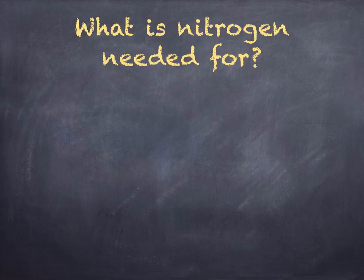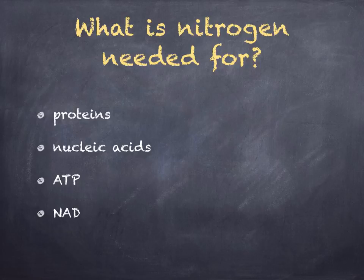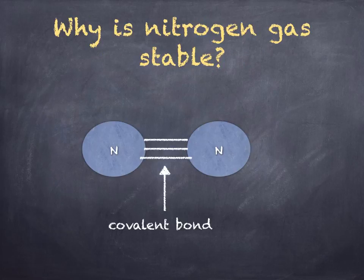Nitrogen is important — it's needed to manufacture proteins, nucleic acids, ATP, and NAD. Although 78% of the atmosphere is nitrogen, there are only a few organisms that can use this nitrogen gas directly. This is because the nitrogen molecule has got two atoms linked by a triple covalent bond, which makes it extremely stable and unreactive.